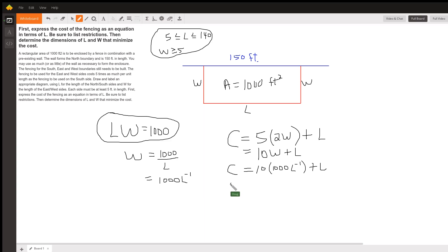set it equal to zero, find the critical numbers, and those values are either going to give us maximum or minimum values for the cost function.